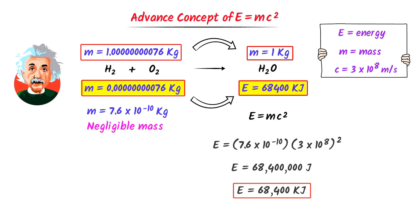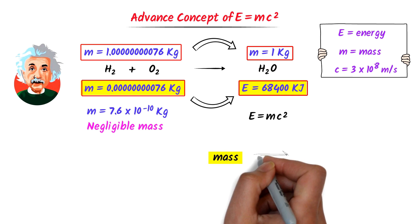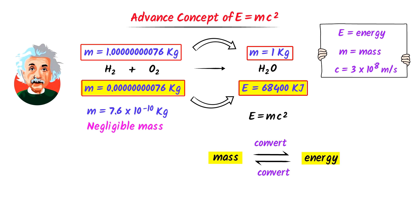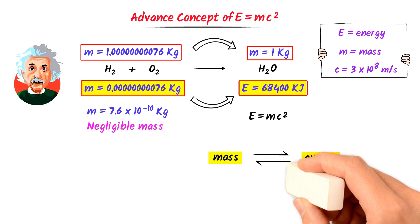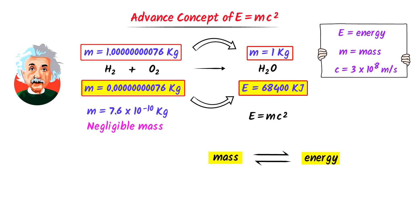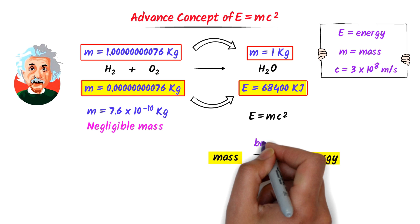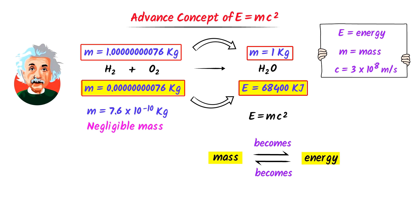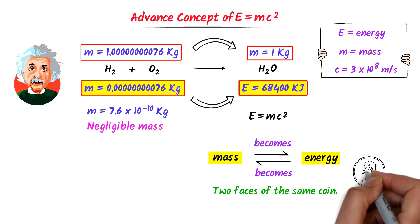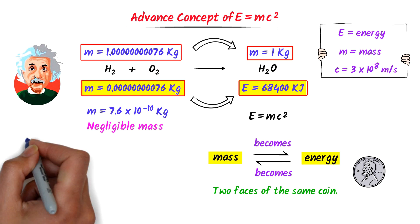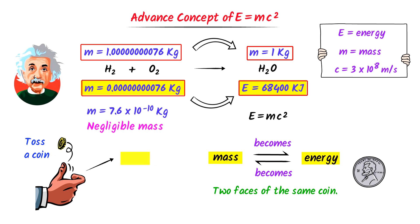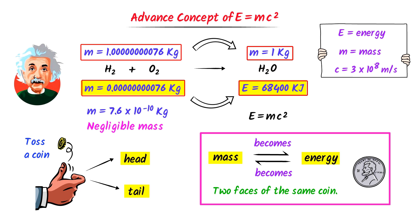At advanced level, according to E equals mc squared, we do not say that mass is converted into energy and vice versa. Rather, we say that mass becomes energy, and energy becomes mass. Or we say that mass and energy are the two faces of the same coin. For instance, if you toss a coin, you get either head or tail. Similarly, in any universal phenomenon, you get either mass or energy, because they are both the same thing.